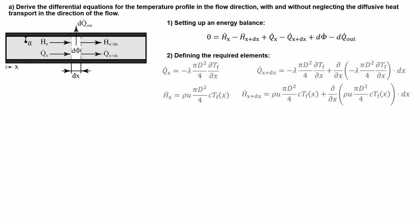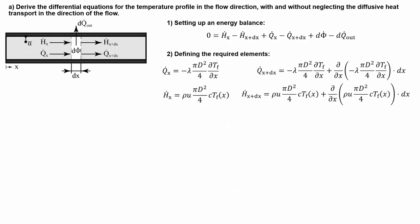The fifth component we have to define will be the energy generated within the element, which yields from the volumetric source term multiplied by the volume of the infinitesimal element. Since our infinitesimal element is a cylinder with cross-sectional area pi times d squared over 4 and height dx, the volume yields from the product of those two terms.